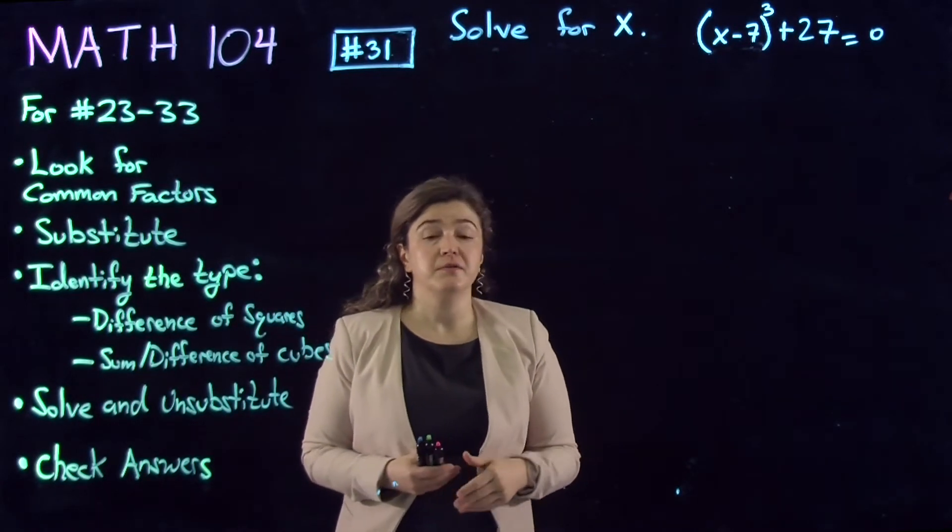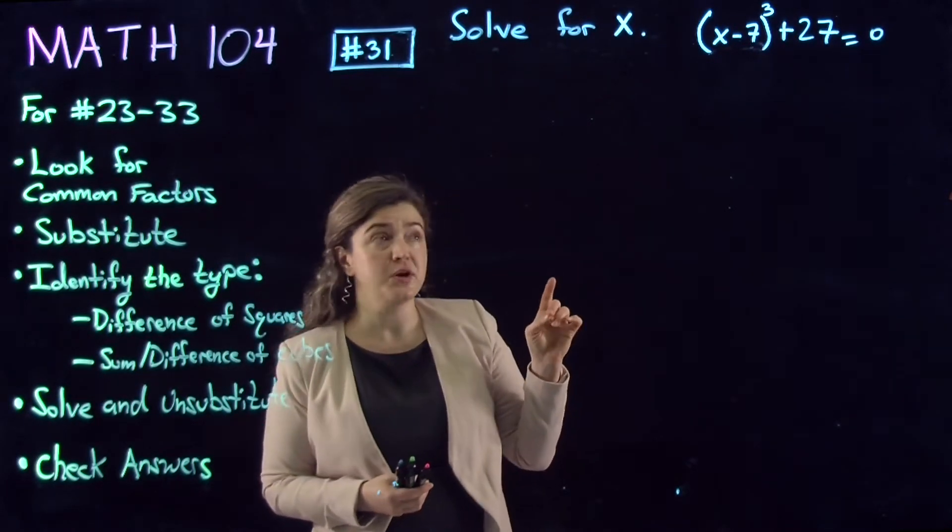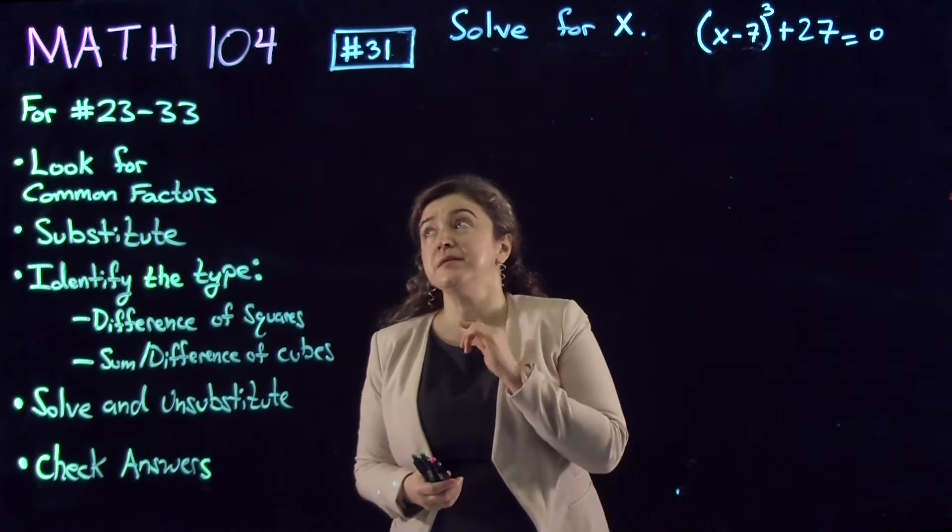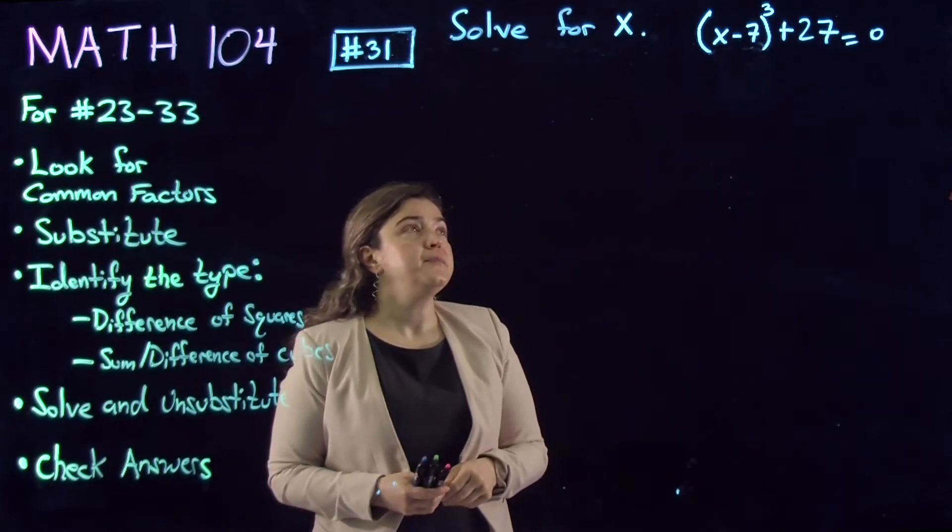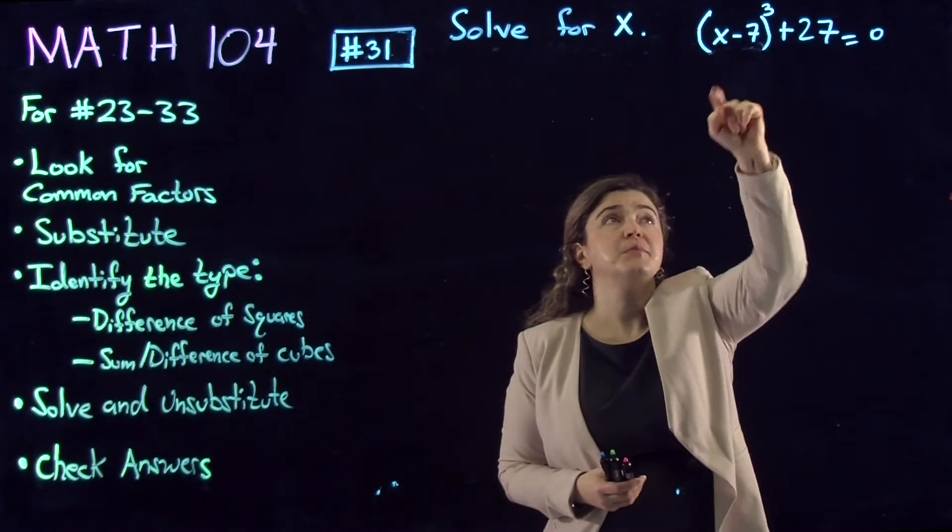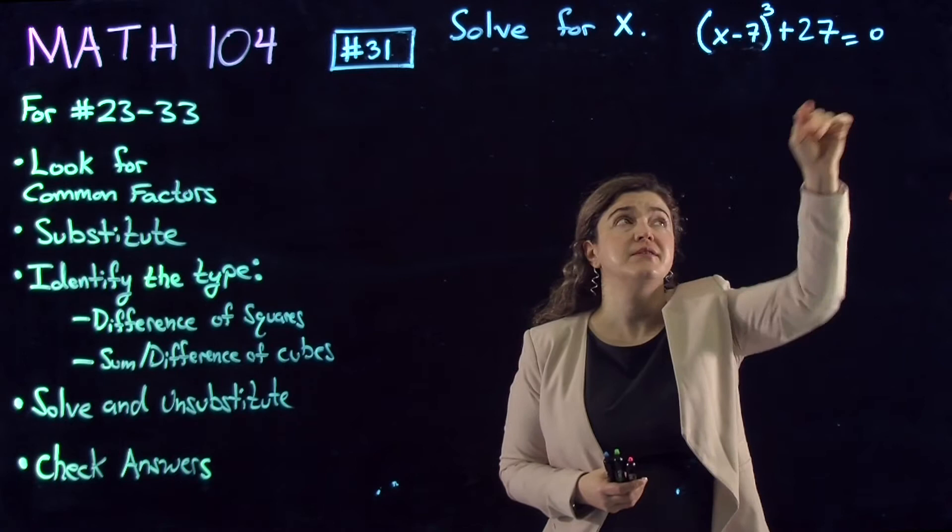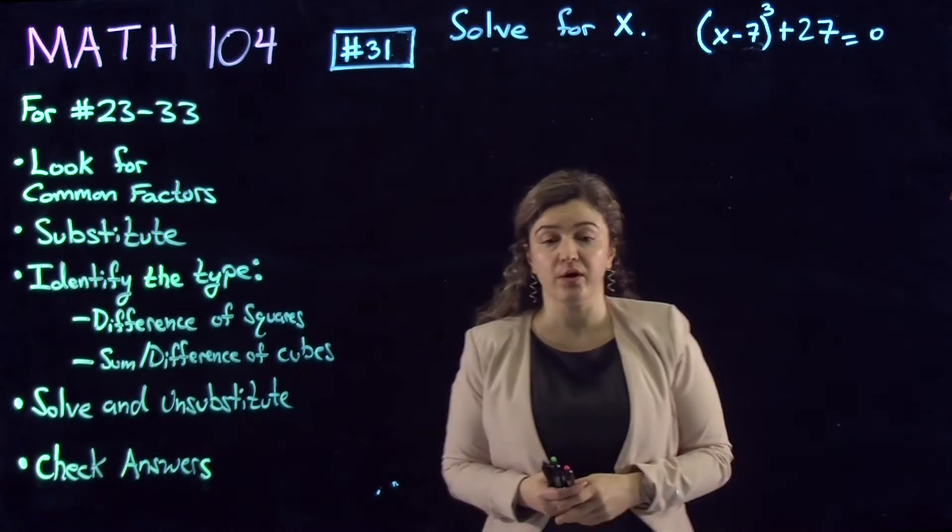These are solving equations which you may have to do substitution for. The question is (x-7)³ + 27 = 0, and solve for x.